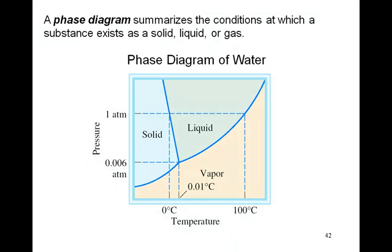This is the phase diagram of water. On the left-hand side we have pressure on the y-axis, and on the x-axis we have temperature. Like most phase diagrams, this one is not really to scale. As you can see here on the bottom, this is zero degrees Celsius, this is only 0.01 degrees Celsius, and this is a hundred degrees Celsius way out there.